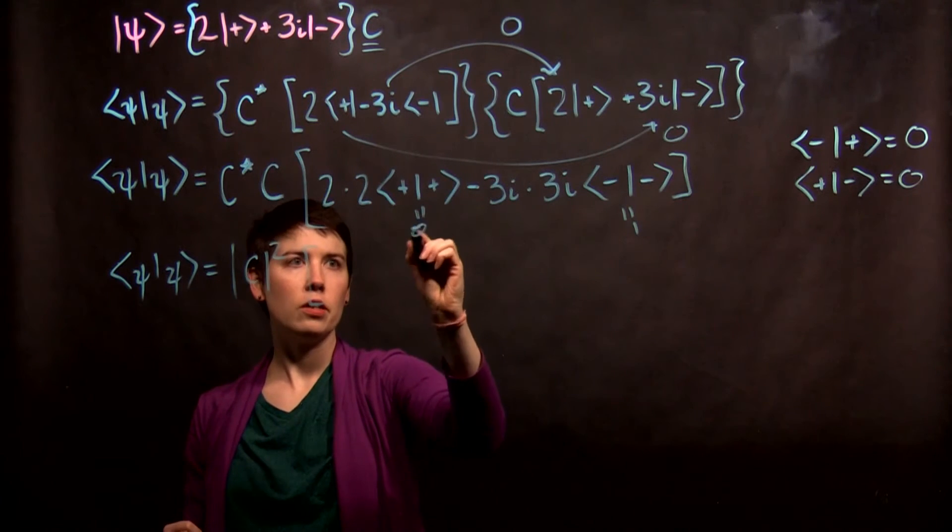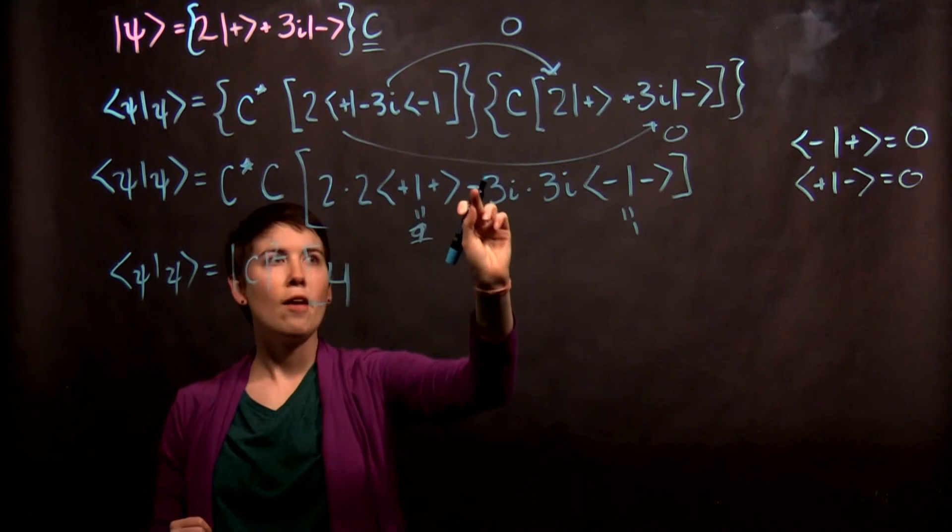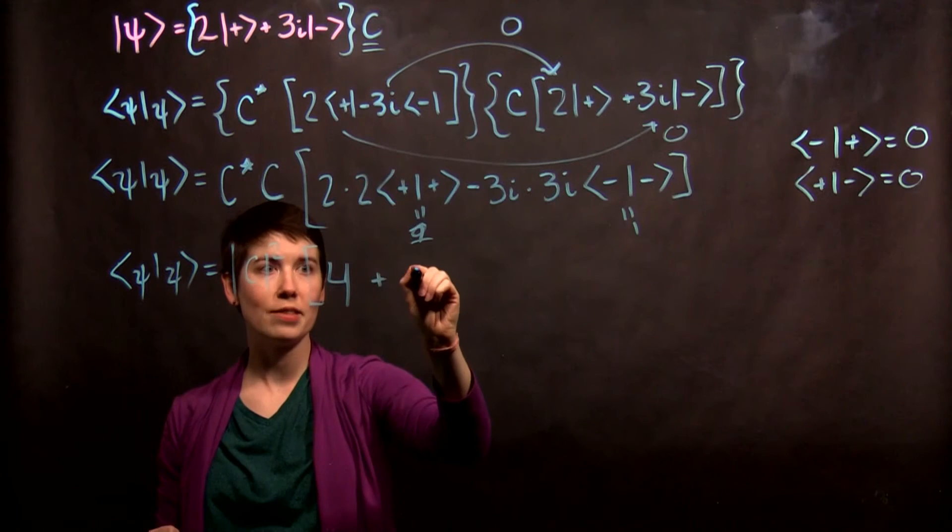Oops, that wasn't a 1 though, was it? That's a 1. So 2 times 2 is 4. And now I have minus, but I have an i squared. So this becomes plus 9.